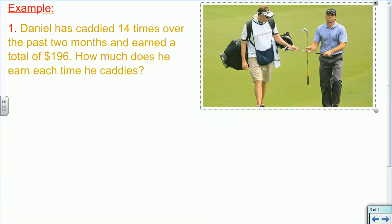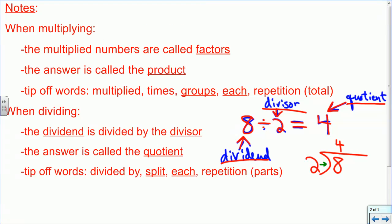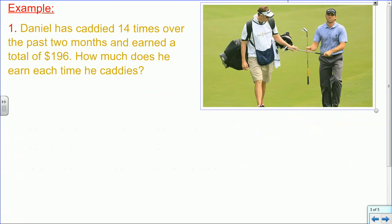So take these notes and then move on to example one with me. Example one says, Daniel has caddied 14 times over the past two months and earned a total of $196. How much does he earn each time he caddies? So hopefully you're noticing that we already have the total. We already have a total of $196, but they're wondering about each.